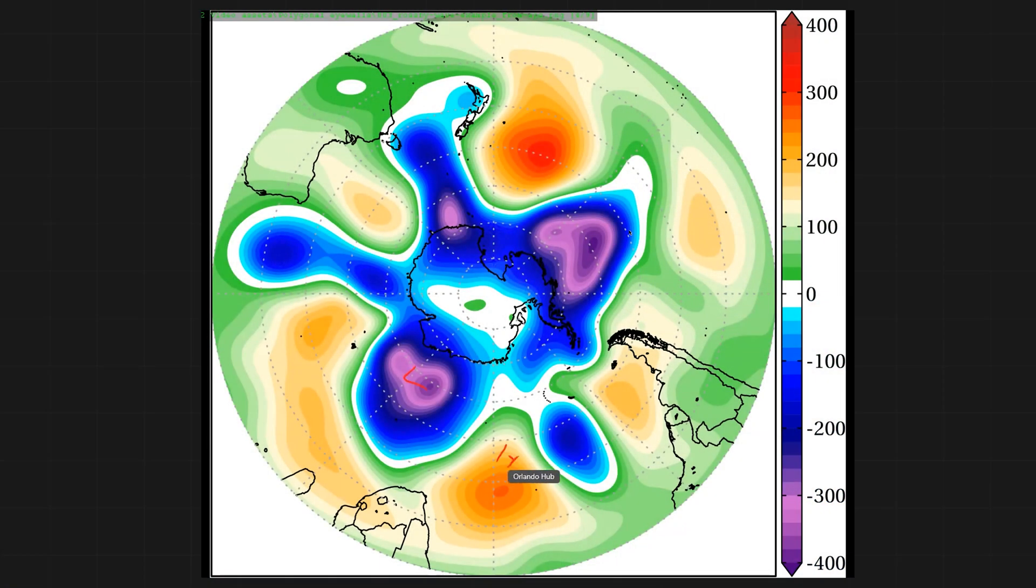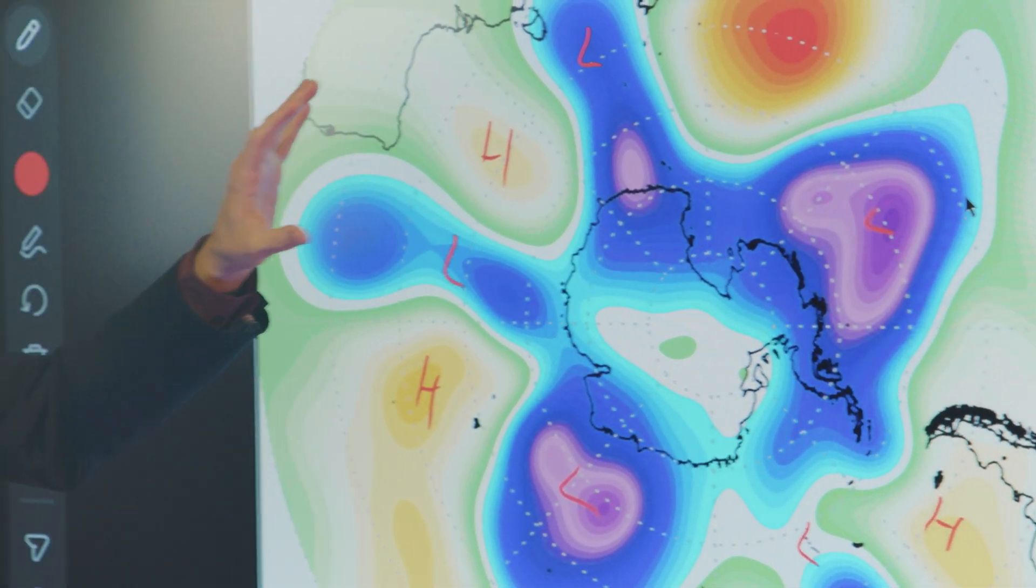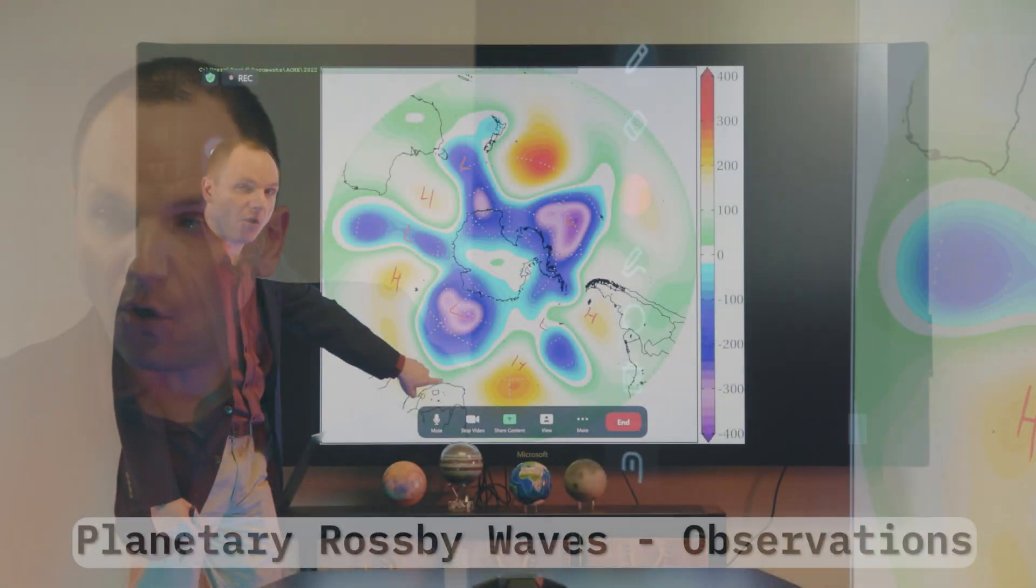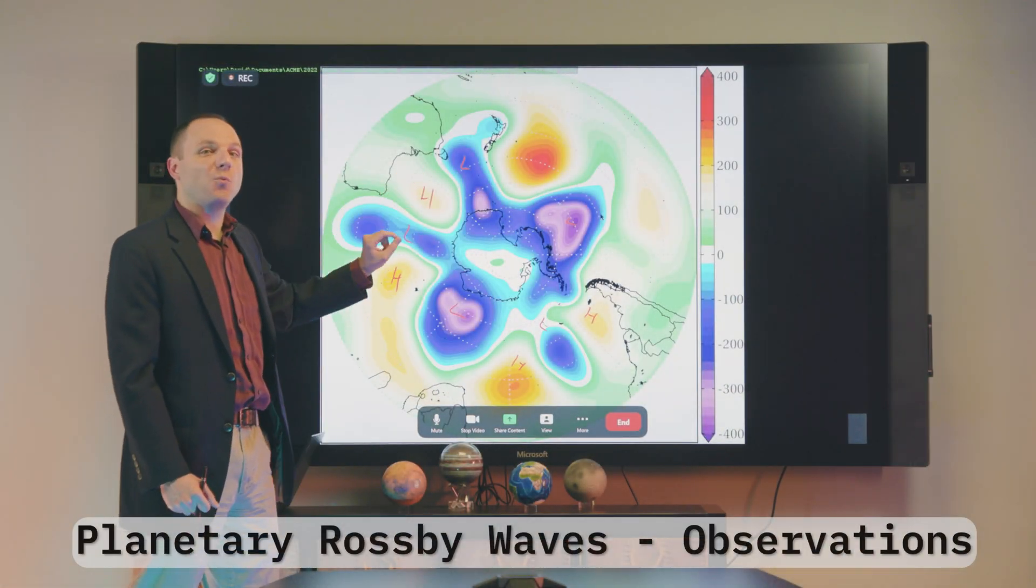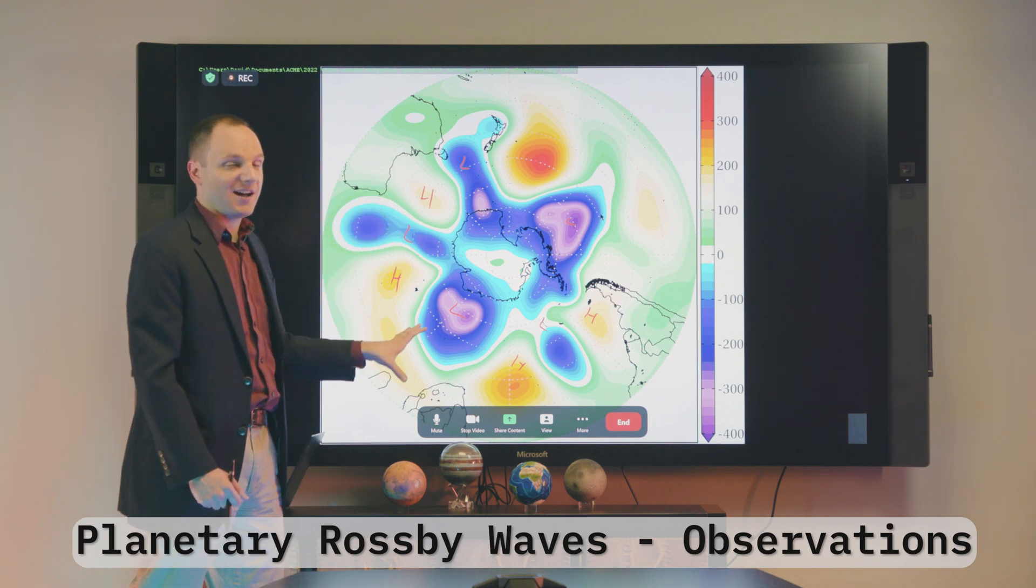And if we trace this, we can see a low, and then a high, and then a low, and then a high, and then a low, and then a high, and then a low, high, low, high. And the way we talk about this is we have five pairs here. And the way we would explain this is we call this azimuthal. By azimuthal, we mean going all the way around the circle. Azimuthal wave number five, because there are five pairs of lows and highs.